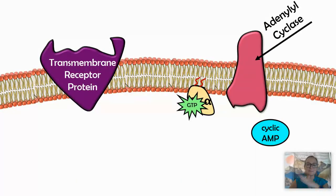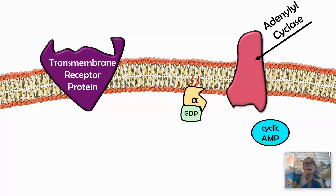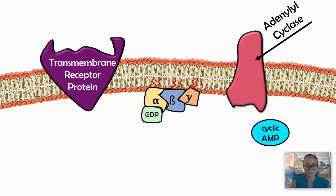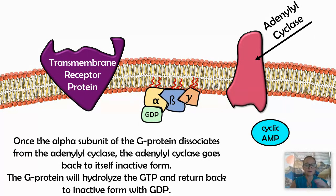Once the alpha subunit from the G-protein dissociates from adenylyl cyclase, adenylyl cyclase goes back to its inactive form. The alpha subunit of the G-protein then hydrolyzes GTP back to GDP, returning to its inactive form so it can be used again the next time a ligand attaches.